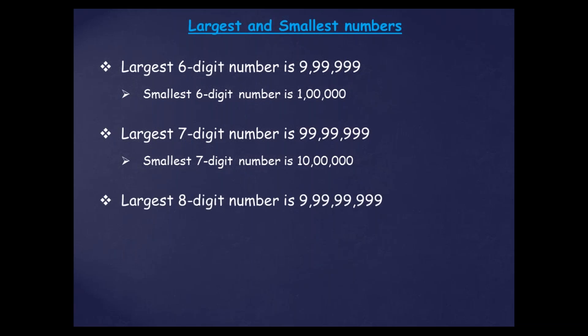Afterwards, the largest eight-digit number is 9,99,99,999. If you count all the digits you will find 9 is given 8 times, so this is the largest eight-digit number. Then the smallest eight-digit number is 1 crore.